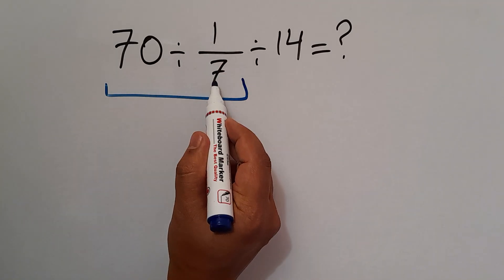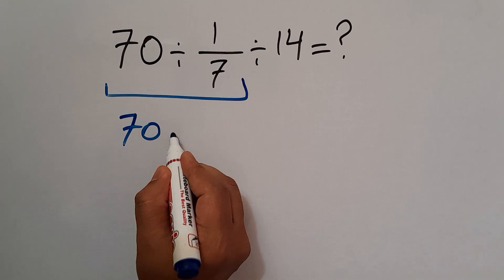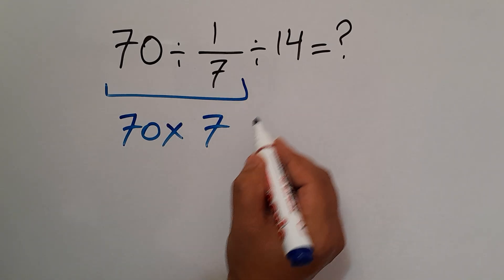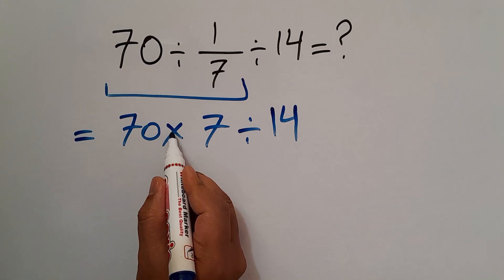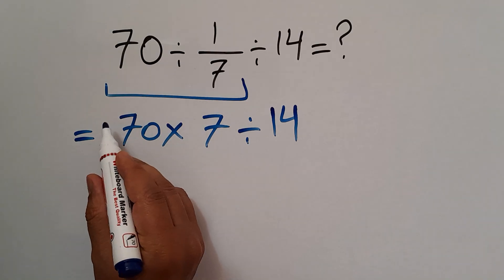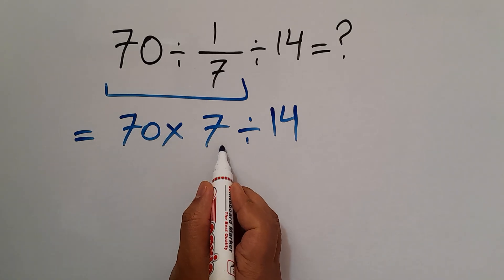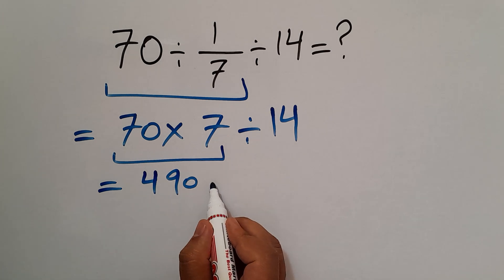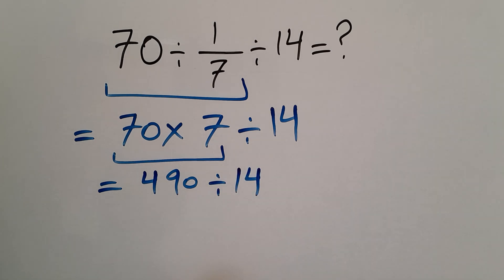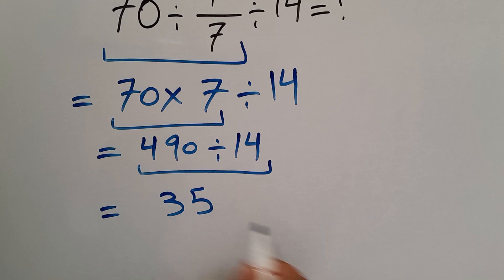70 divided by 1 over 7, according to the KCF rule, can be written as 70 times 7, and here we have divided by 14. Since multiplication and division have equal priority, we work from left to right. So first 70 times 7 equals 490, then 490 divided by 14 equals 35. Our final answer is 35.